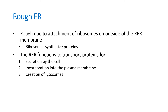The rough endoplasmic reticulum is rough because it has ribosomes on its surface, and ribosomes help make proteins. Those proteins are made on the surface of the rough ER, then sent into the rough ER, where it packages them. Those packaged proteins might leave the cell, get embedded into the plasma membrane, or become a new organelle called lysosomes.